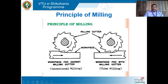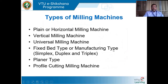In your syllabus we have only the horizontal or plain milling machine and the vertical milling machine. Types of milling machines include: plain or horizontal milling machine, vertical milling machine, universal milling machine, fixed bed type or manufacturing type (with simplex, duplex, and triplex variants), planar type milling machine, and profile cutting milling machine. Let us discuss the plain or horizontal milling machine.